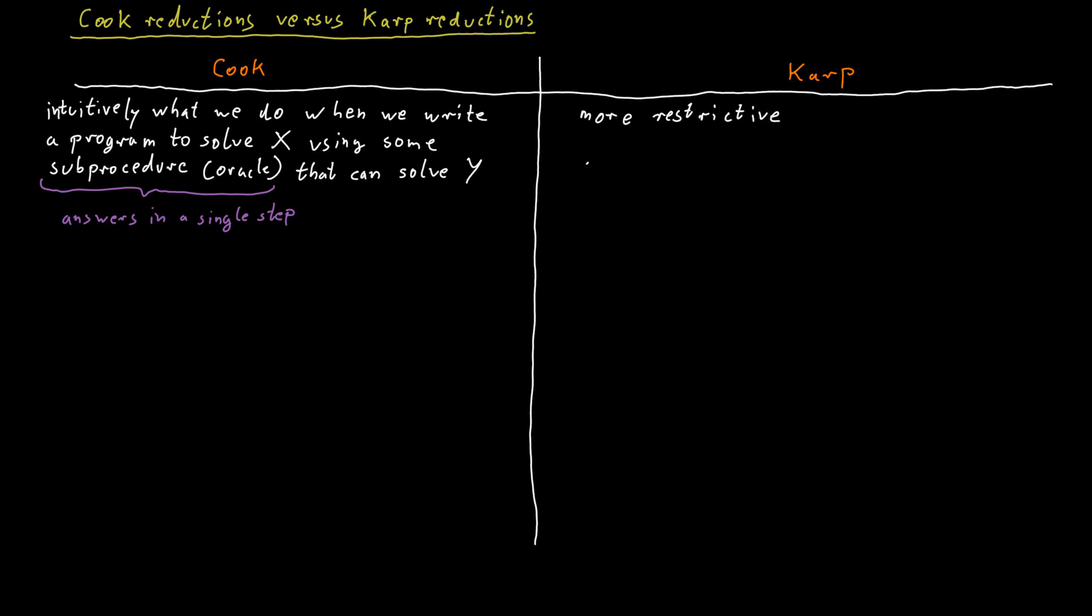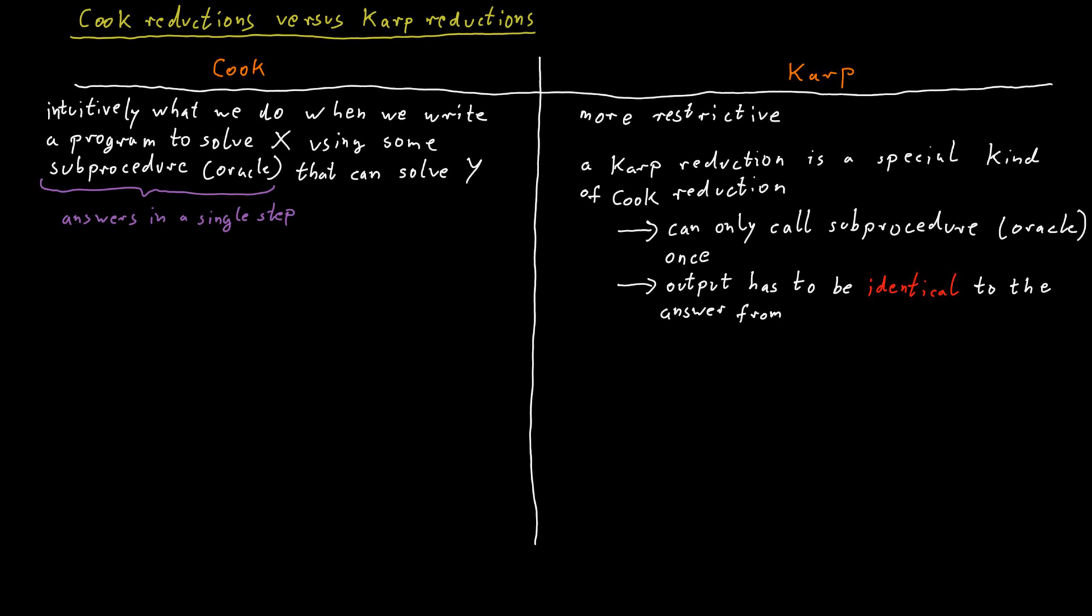Karp reductions are much more restrictive. You can think of a Karp reduction in the following way: a Karp reduction is a Cook reduction, but you can only call the oracle once and you can only do so at the very end. And then whatever your answer is has to be exactly the same as the answer that you got from the oracle.